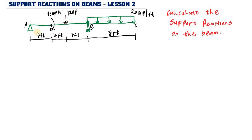So we are going to have Ay acting upward, and Ax acting to the right. On the roller support B, we are going to have By acting upward. These are the forces we need to calculate.